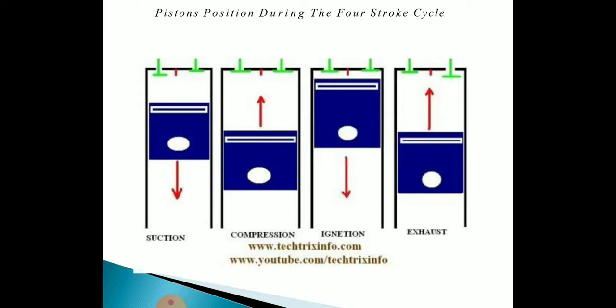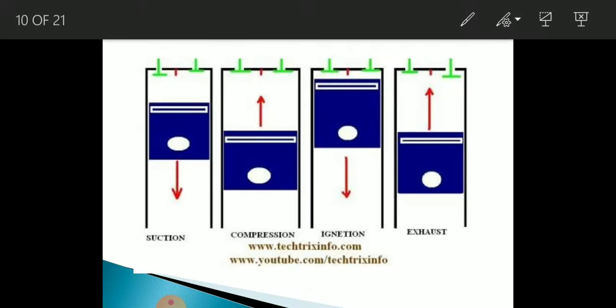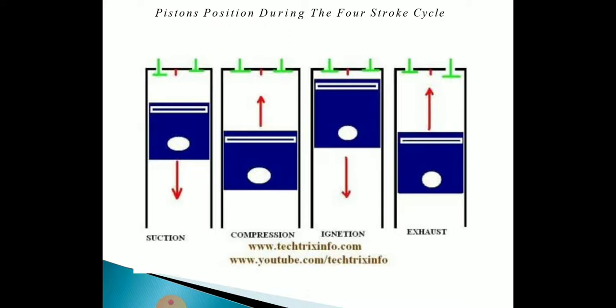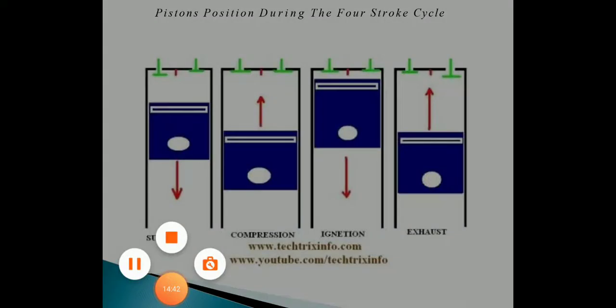To summarize the four strokes: in the first stroke the piston moves downward (suction); in the second stroke it moves upward and compresses the air-fuel mixture; in the third stroke, due to burning of gases, the piston is forced downward (power); and in the fourth stroke the piston moves upward and throws exhaust gases to the atmosphere. In the next video we will discuss the two-stroke engine.